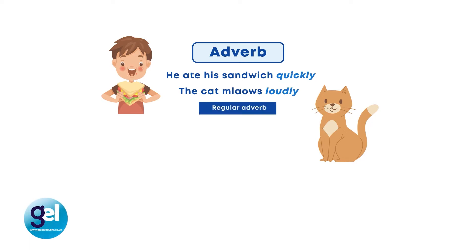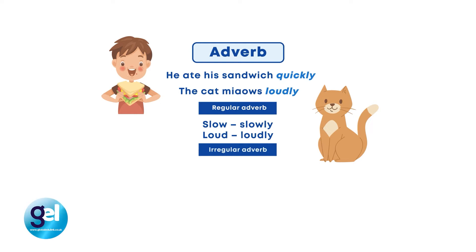With regular adverbs, we form them by adding -ly to an adjective — so slow becomes slowly and loud becomes loudly. Watch out for irregular forms which students will need to practise and remember. Good becomes well, fast becomes fast, and late becomes late.